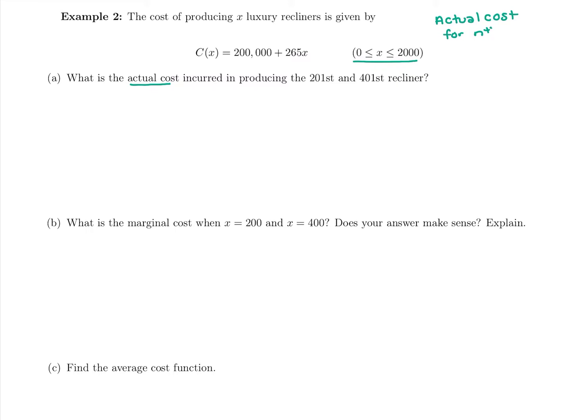Actual cost for nth unit, we need to know these formulas, you will not be given these formulas so I would write them down as often as possible. If you want to know a specific unit n, you'd plug in n into the total cost and subtract plugging in n minus 1, the unit before it. So we want to know for the 201st and the 401st recliner.